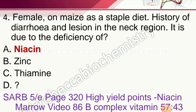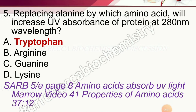Question 4: A female on maize as a staple diet with history of diarrhea and lesions in the neck. The deficiency is due to deficiency of — options are zinc, thiamine, and niacin. The correct answer is niacin.